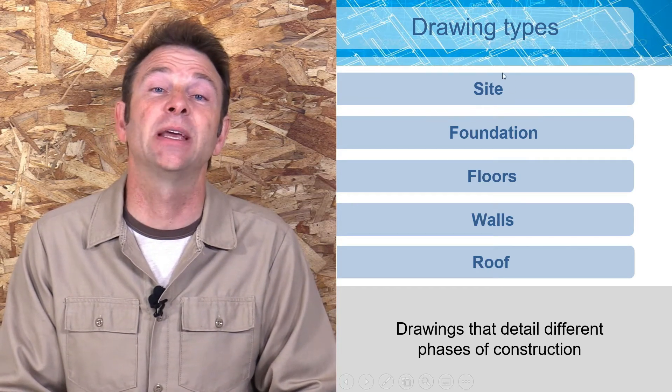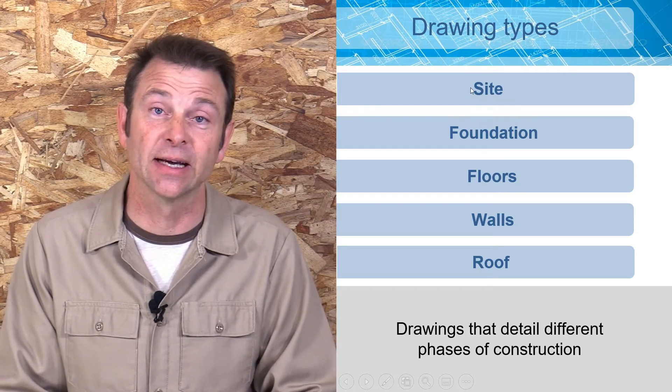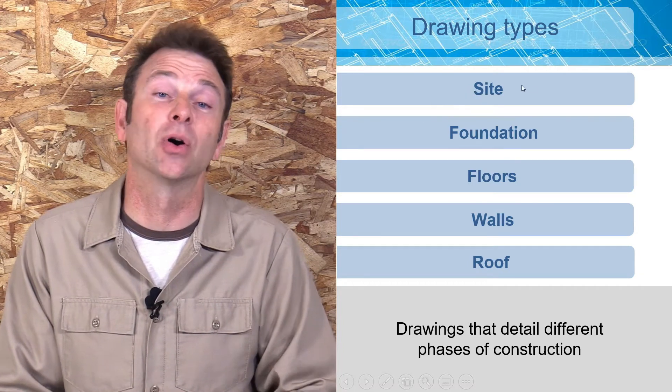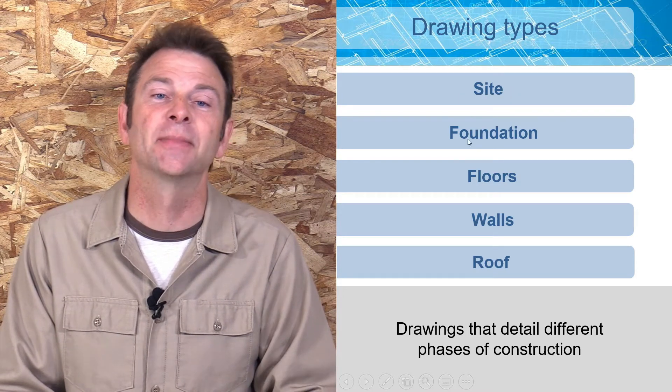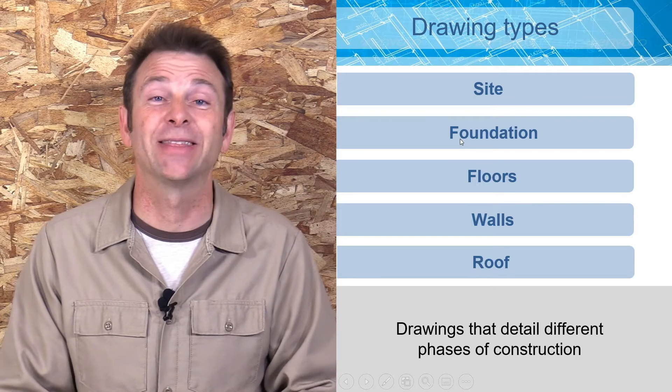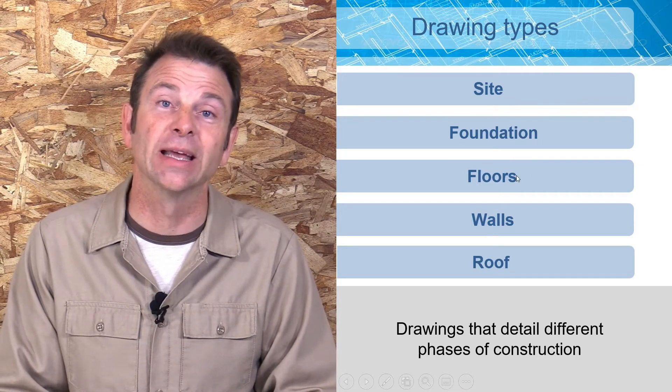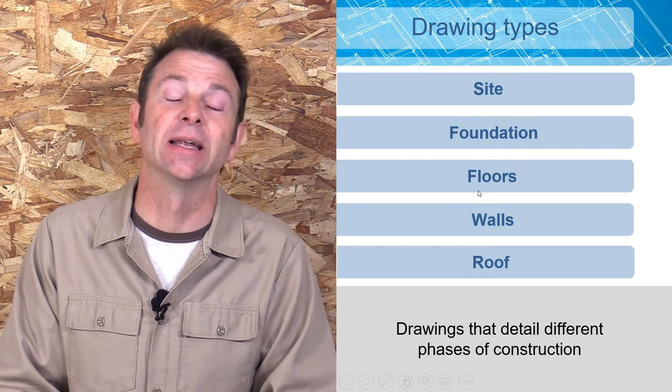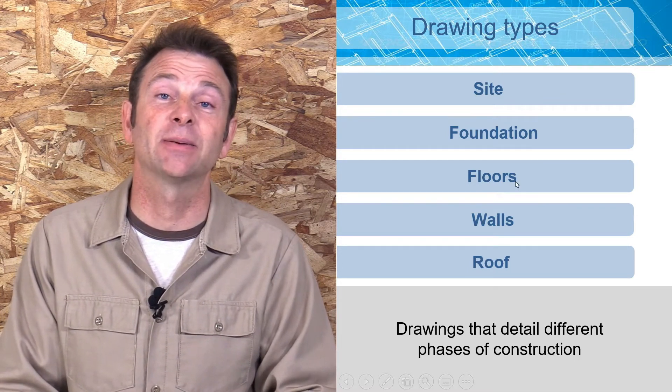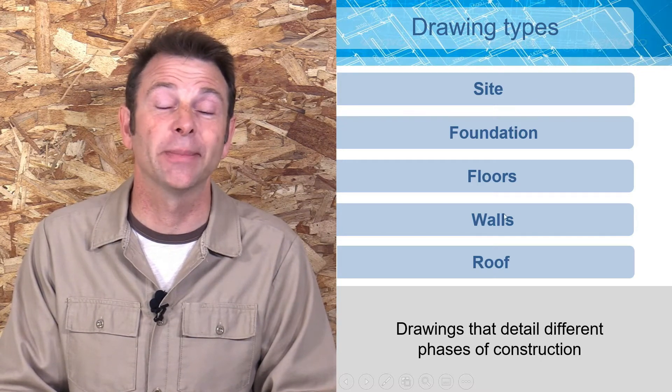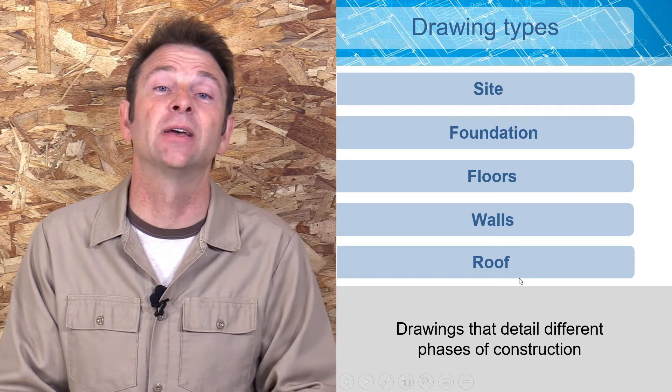This could be a site plan that's going to talk about how we need to grade that site before we can build on it, or it could be the pitch or the slope of the site. A foundation plan is going to talk to us about that aspect or phase of the building. A floor framing plan could be a type of view that's going to tell us about how to build our floors. We need information about how to build our walls or how to build our roofs. All of these will end up as different drawing types.